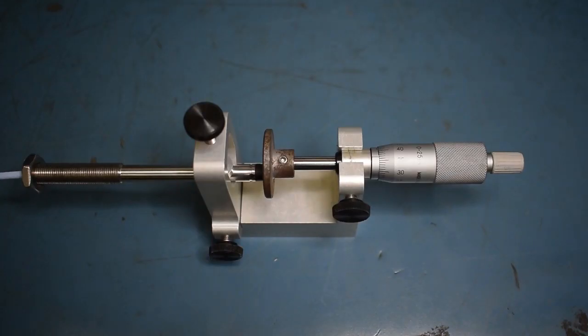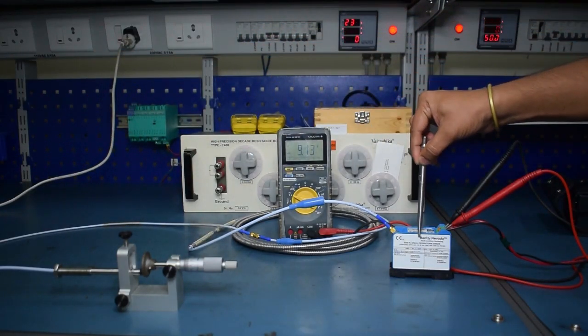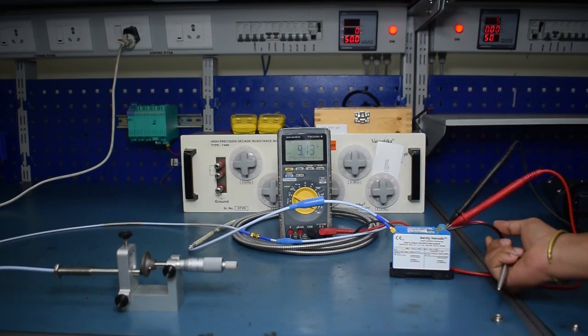The probe has to be mounted in the micrometer, and the probe has to be connected to the proximeter through an extension cable. Power up the proximeter by 24 volt DC supply.